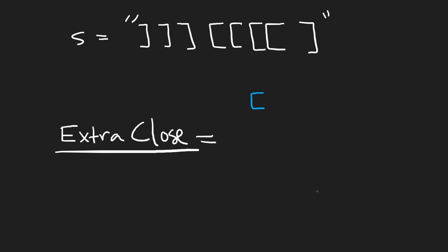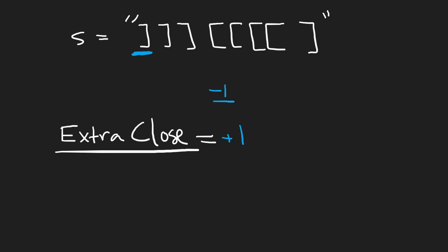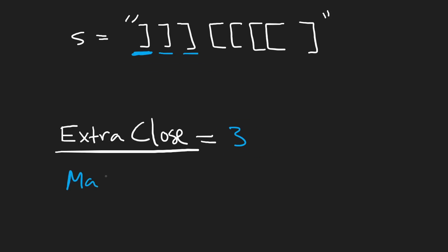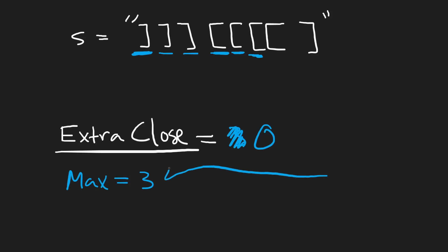Now let's look at an example where we actually have to perform swaps. We start with a closing bracket, so we add one. A second closing bracket — add another, we're at two. A third closing bracket — add another, we're at three. So our max so far is three. Then we get three opening brackets, subtracting three, bringing us to zero. That doesn't change our maximum — at one point in time we had three extra closing brackets, and that's what we care about: the maximum at any given point.